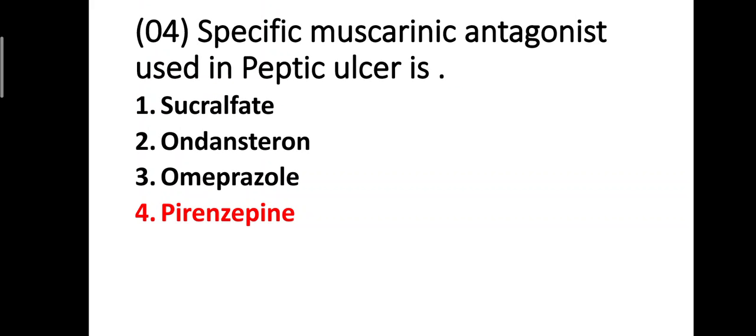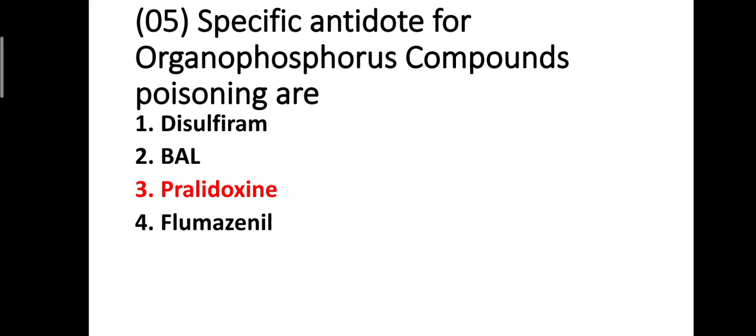Question four: specific muscarinic antagonist used in peptic ulcer. Question five: specific antidote for organophosphorus compound poisoning. Options include disulfiram, BAL (British Anti-Lewisite), and pralidoxime. The correct answer is pralidoxime — pralidoxime is the antidote for organophosphorus compound poisoning.